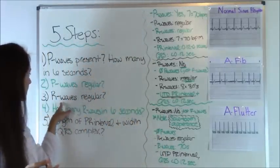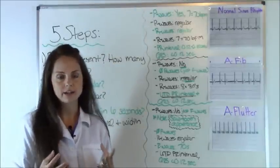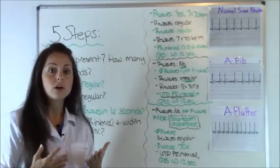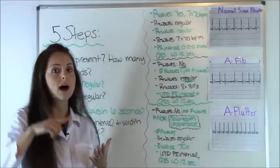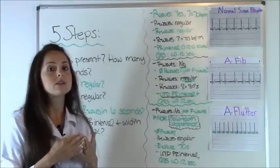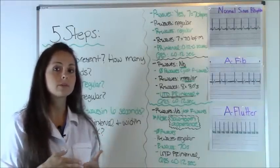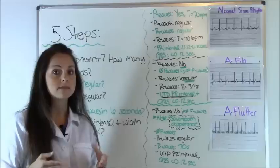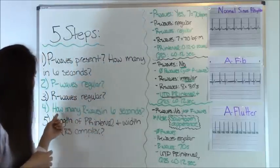Next, number three, are your R waves regular? This is part of the QRS complex where you have the spike, and you'll want to measure out with either your calipers or a piece of paper if the R waves are regular.